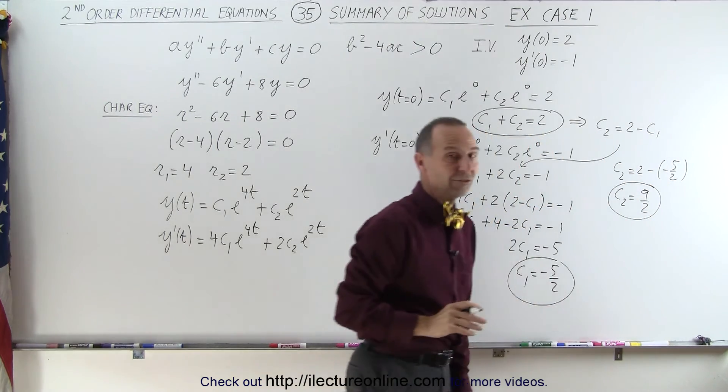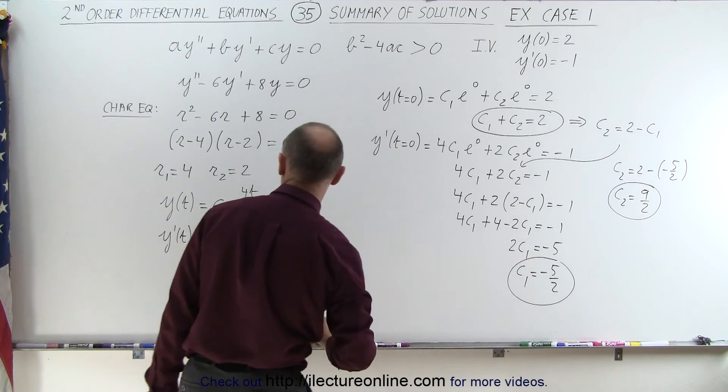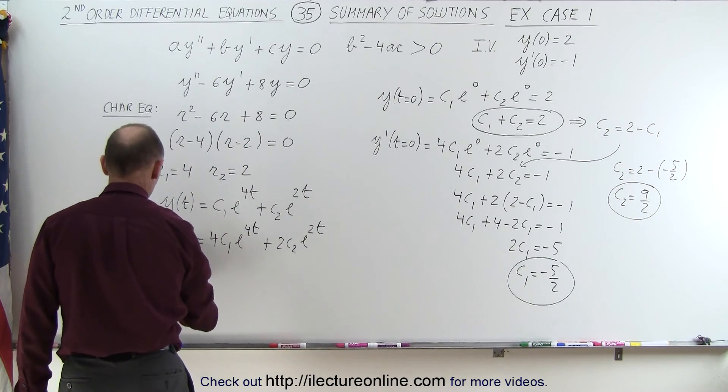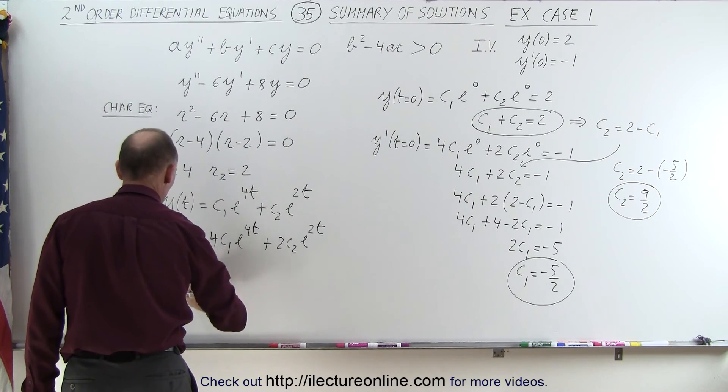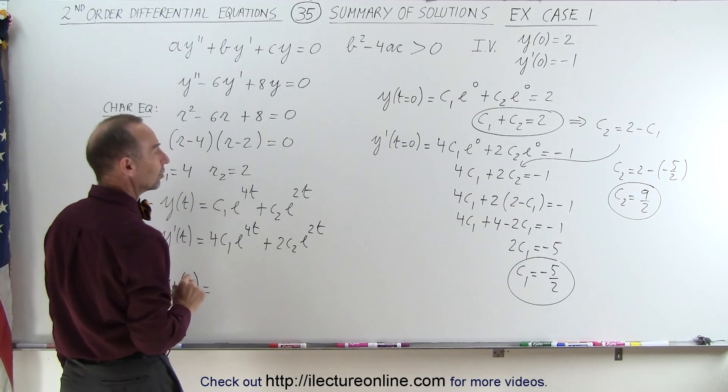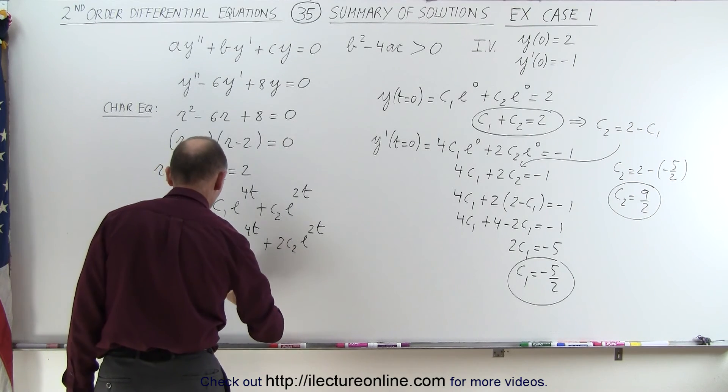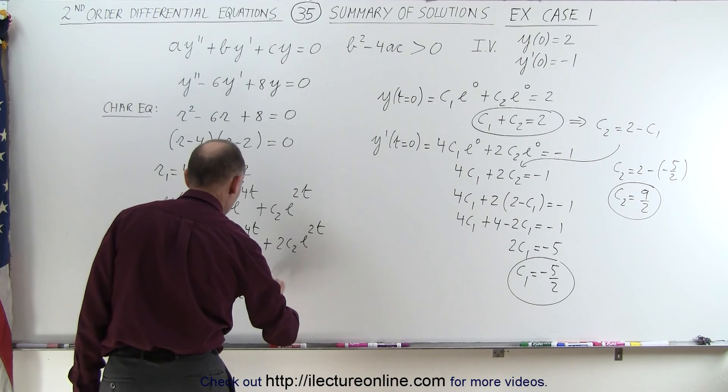Now that I have the two constants, I can find the exact solution. So that means that the solution to the original differential equation is equal to c1, which is minus 5 over 2, e to the 4t,